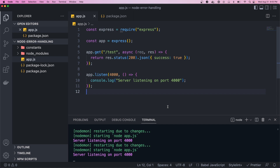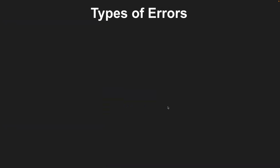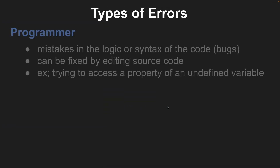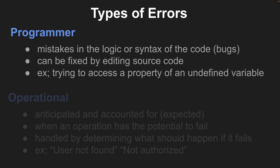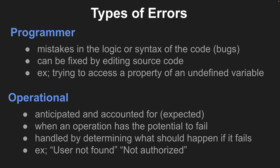Before we get into the code, I want to go over the different types of errors that can occur. The first type is a programmer error, and this happens when there are mistakes in the logic or syntax of the code. They're also referred to as bugs and can be fixed by just editing the source code. Some examples could be trying to access a property of an undefined variable.